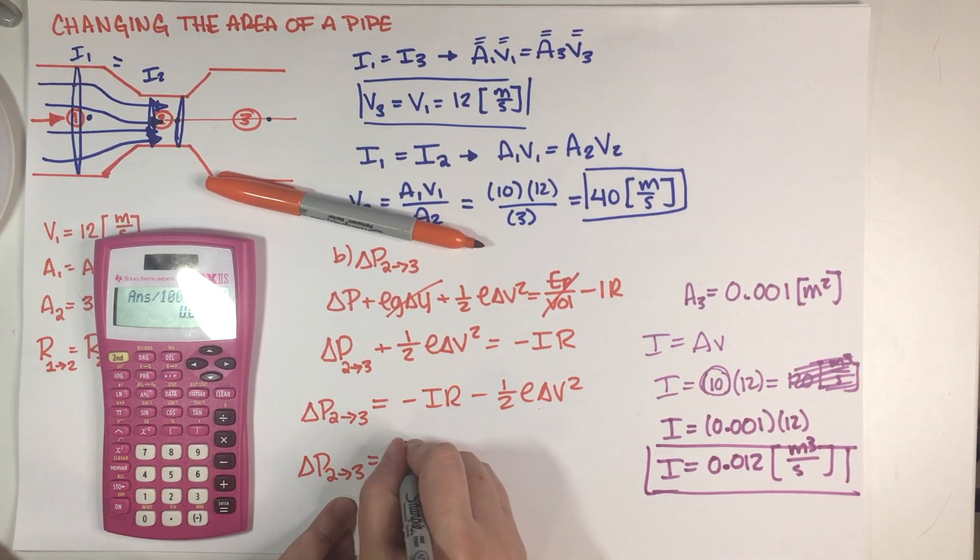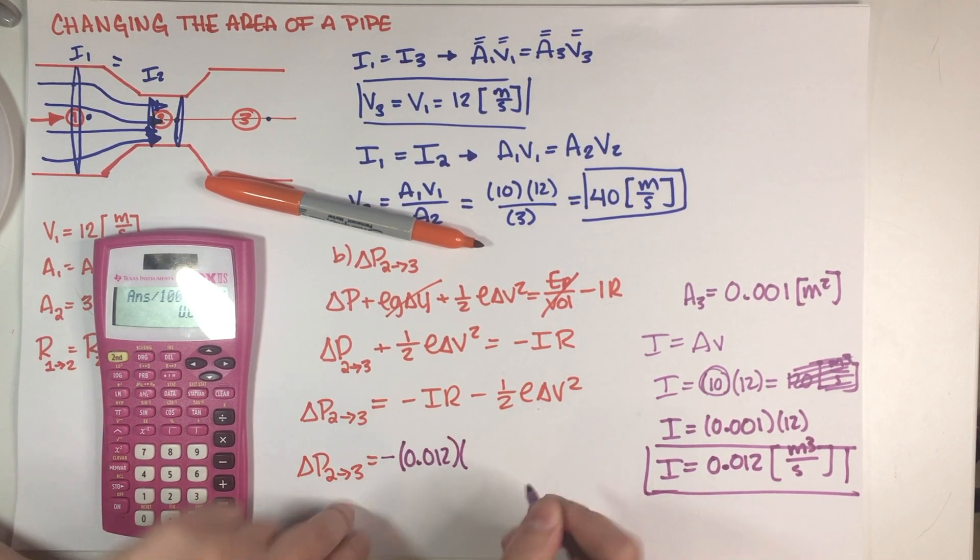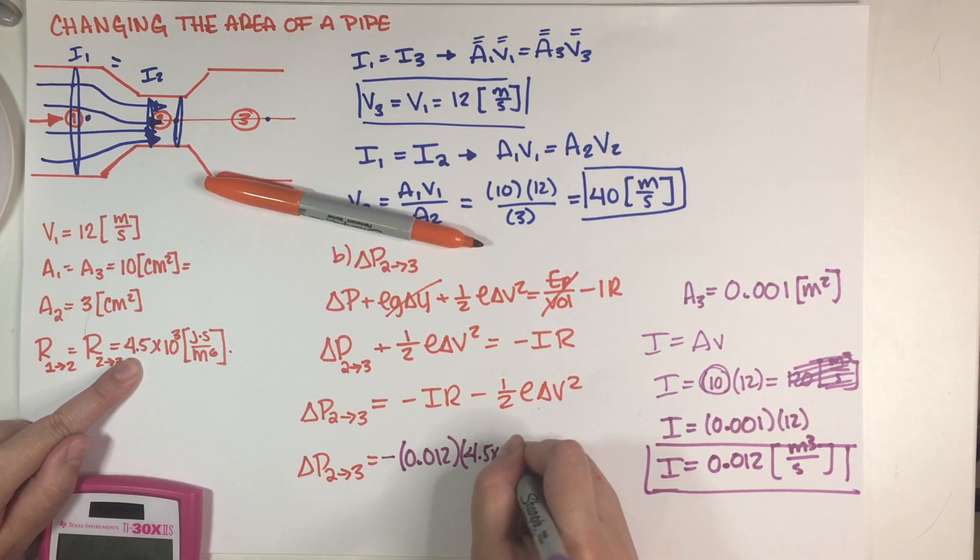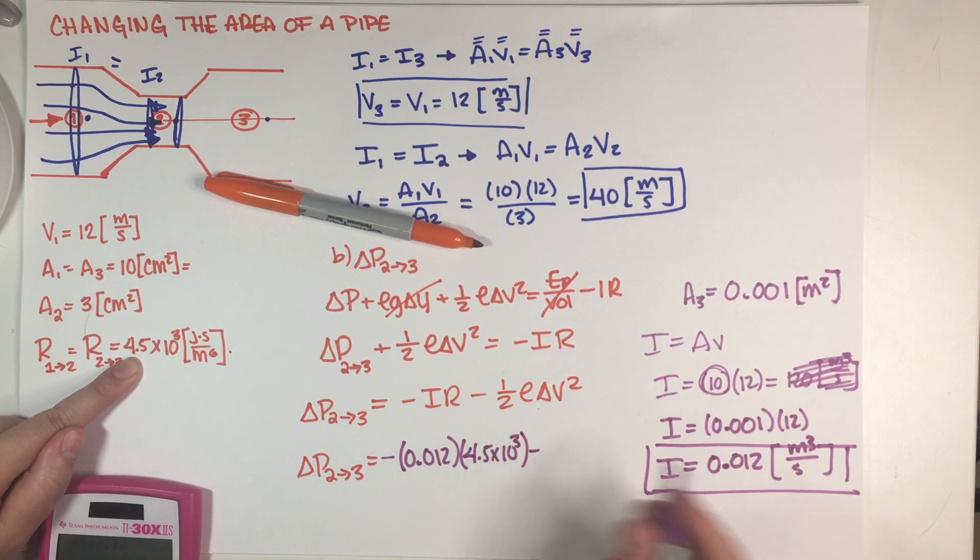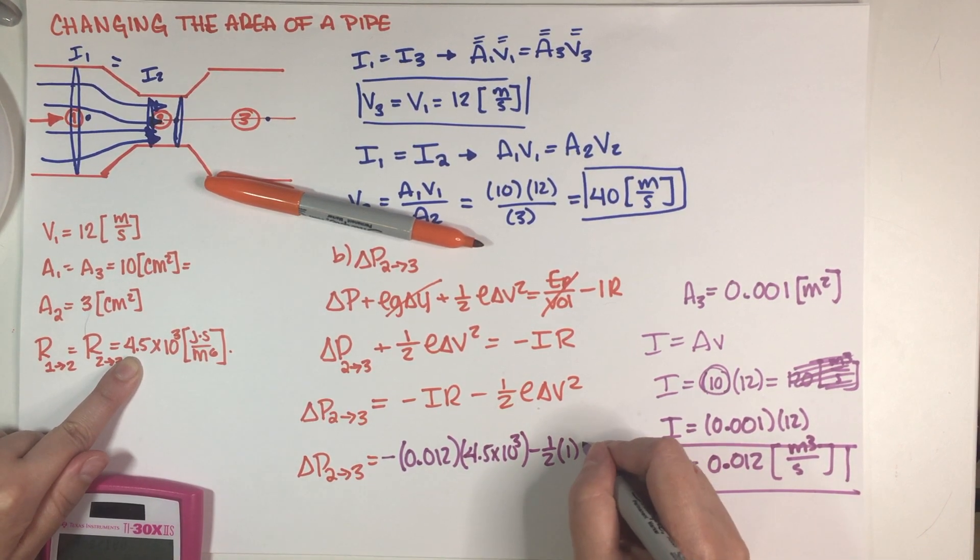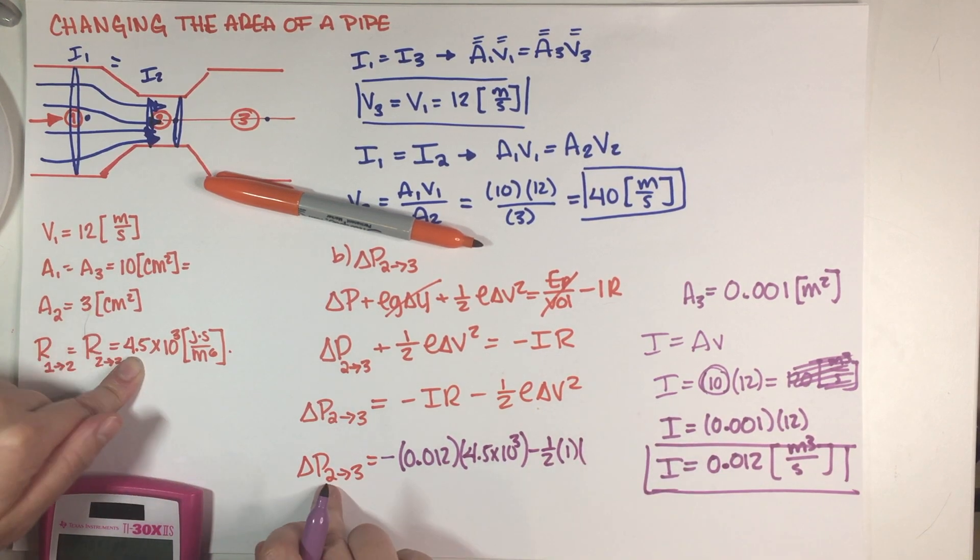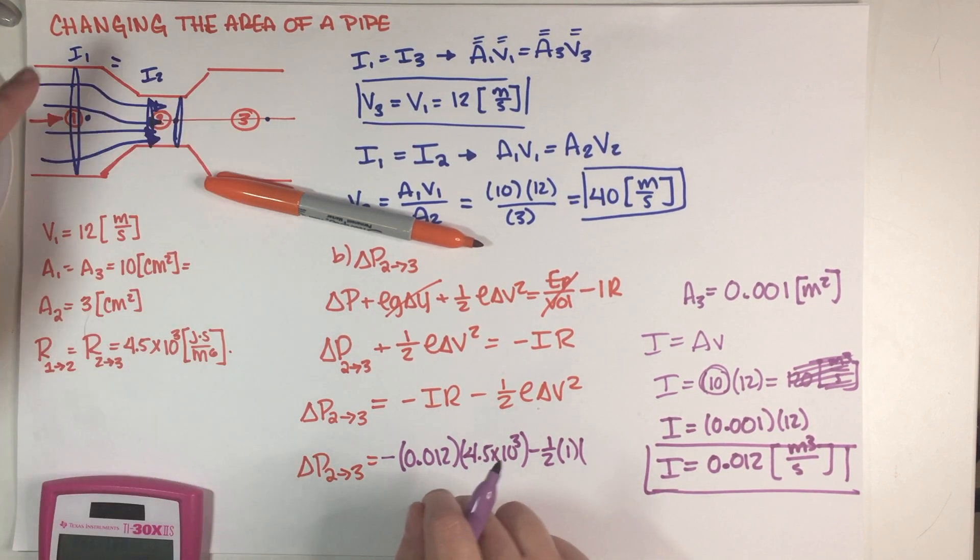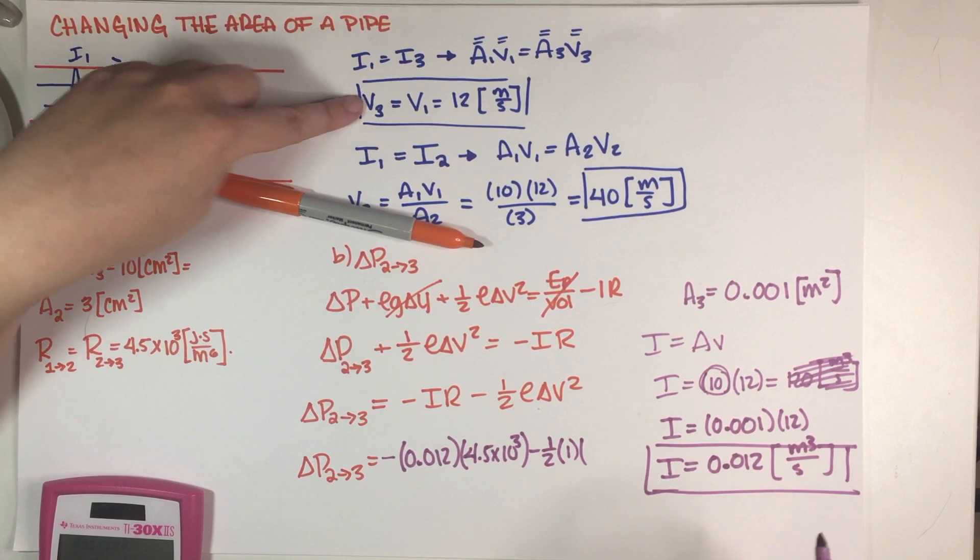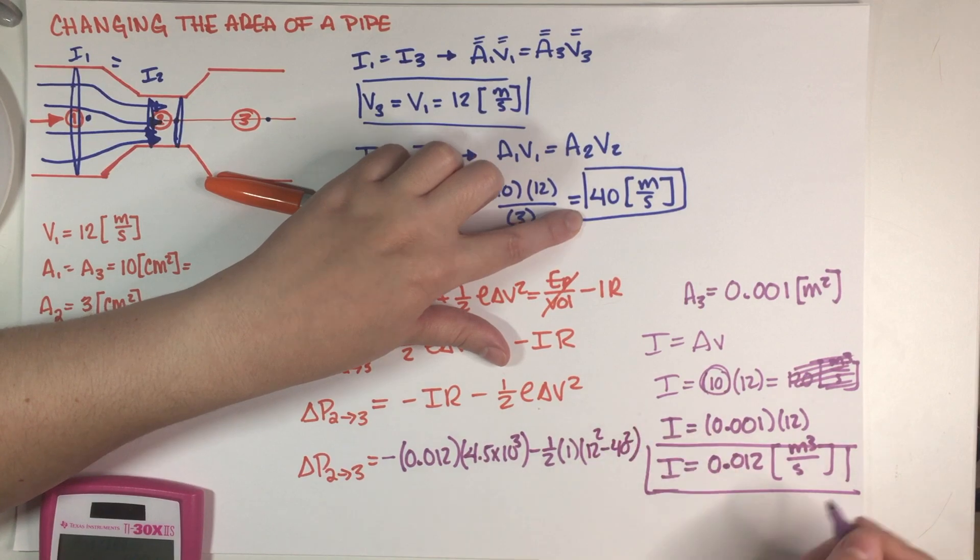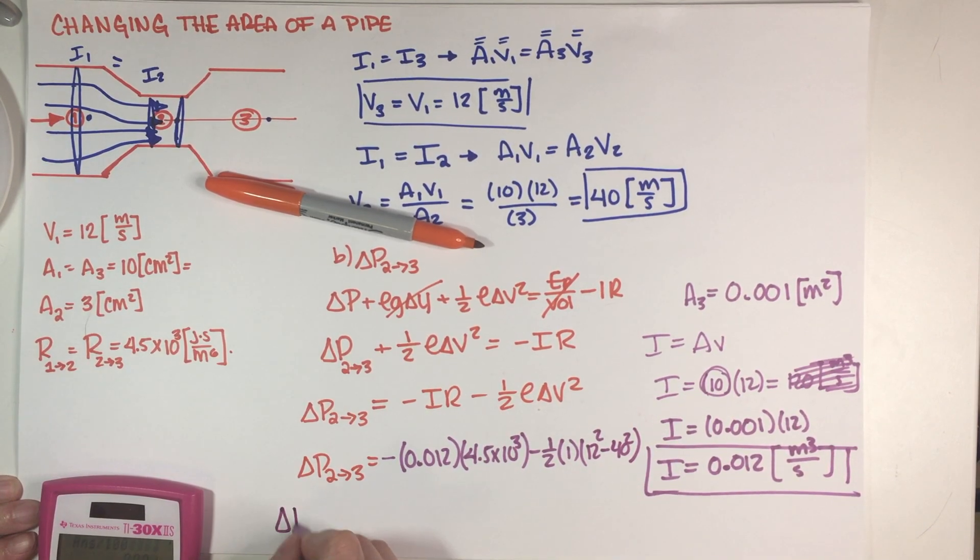So this is negative 0.012, your resistance is already in SI units, so 4.5 times 10 to the 3, negative 1 half rho. This is air and the density of air in SI units is just equal to 1. And delta V squared, we just need to be mindful that it's final minus initial, so it's 3, so 0.3 minus 0.2, so this would be 12 squared minus 40 squared like this. So let me just put that on a calculator.